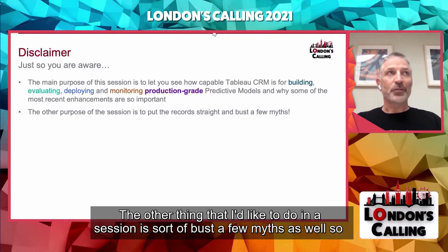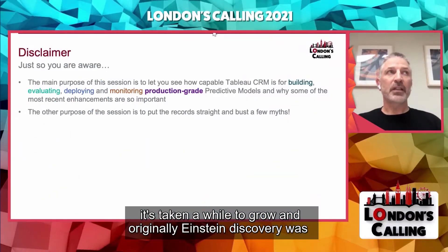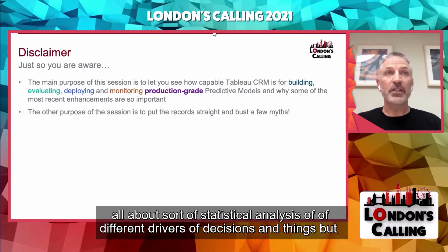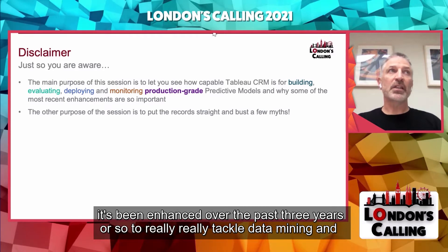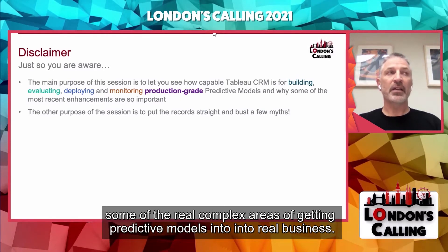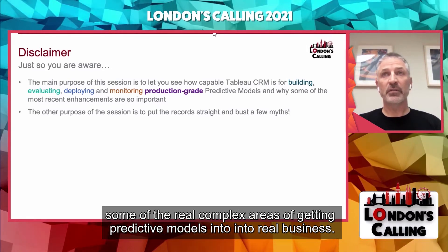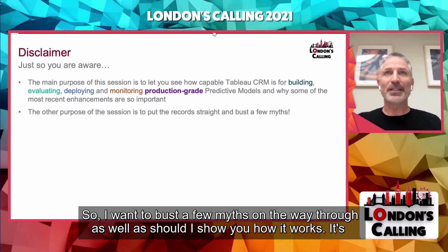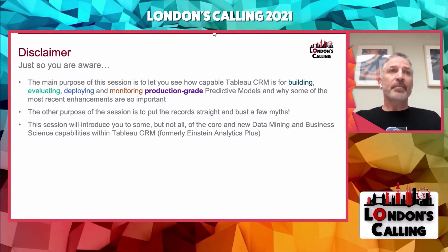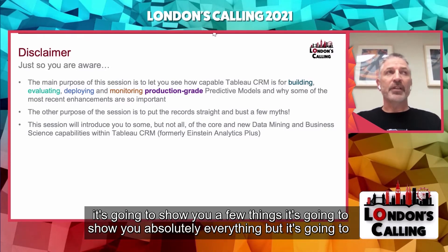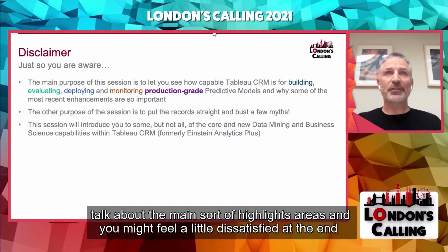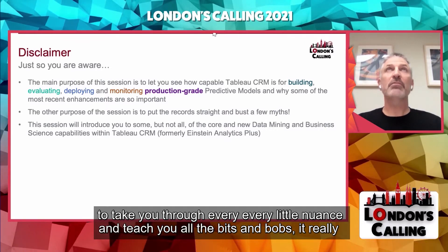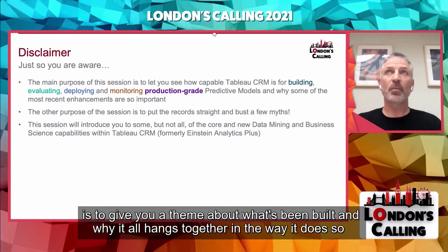I'd like to bust a few myths as well. Originally, Einstein Discovery was all about statistical analysis of different drivers of decisions. But it's been enhanced over the past three years or so to really tackle data mining and some of the real complex areas of getting predictive models into real business. I want to bust a few myths on the way through as well as show you how it works. It's going to talk about the main highlights areas — there's so much stuff in here, I really don't have time to take you through every little nuance. It really is to give you a theme about what's been built and why it all hangs together in the way it does.